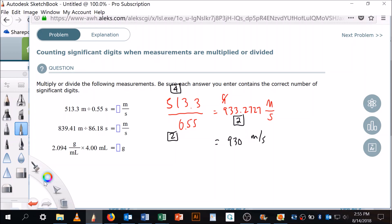Let's do the same thing with the next one. 839.41 divided by 86.18 is equal to... I'm doing my calculator here... 839.41 divided by 86.18 is equal to 9.74019 and a bunch of digits.